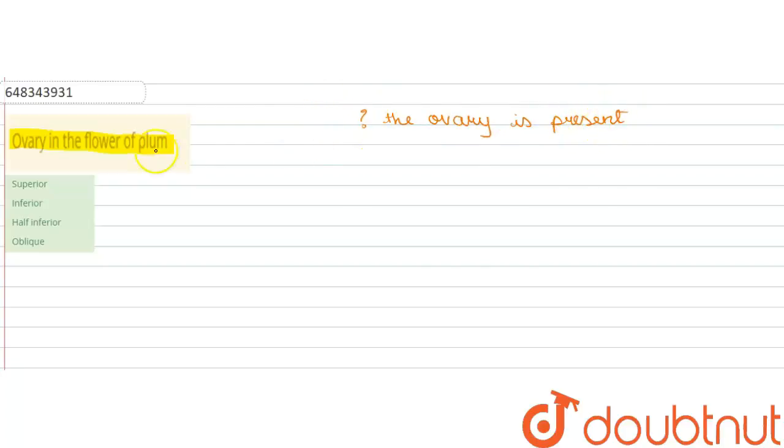Now the ovary is classified into two types: the superior ovary and the inferior ovary.